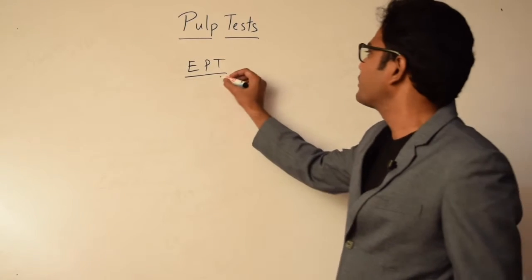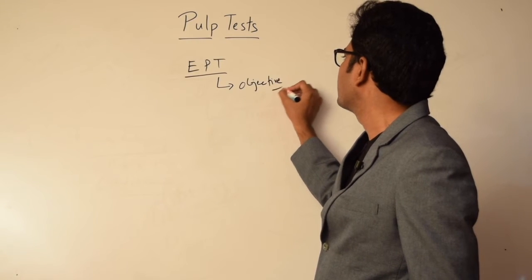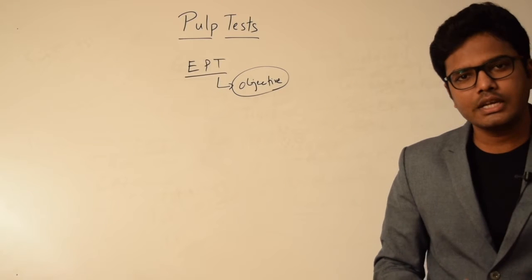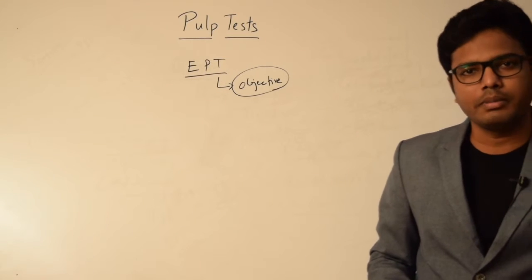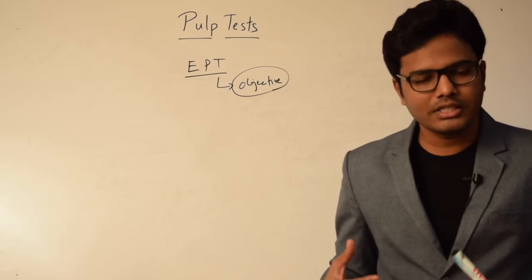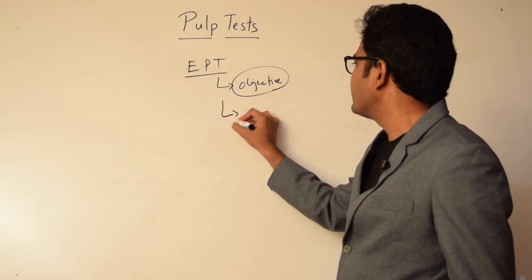The objective of electrical pulp testing is to evaluate the vitality of a given tooth by stimulating sensory fibers present within the pulp. Based on the response, we analyze the vitality. Before understanding in detail the functioning of EPT, we need to have an idea on how exactly this electrical pulp testing is performed.